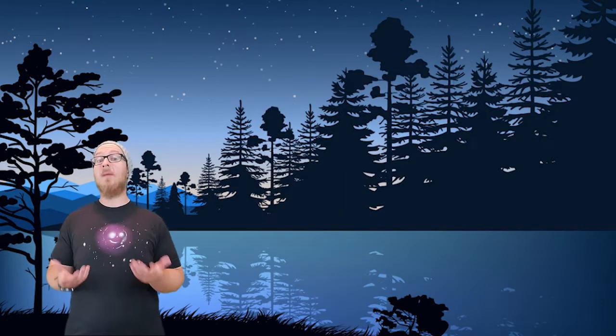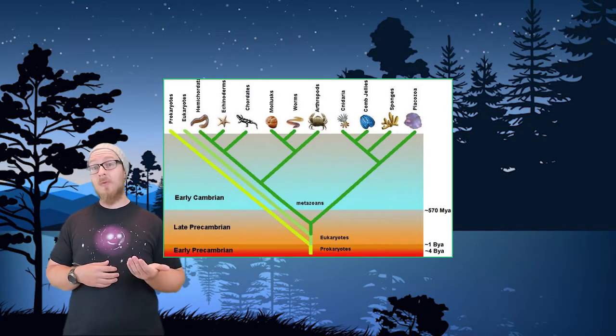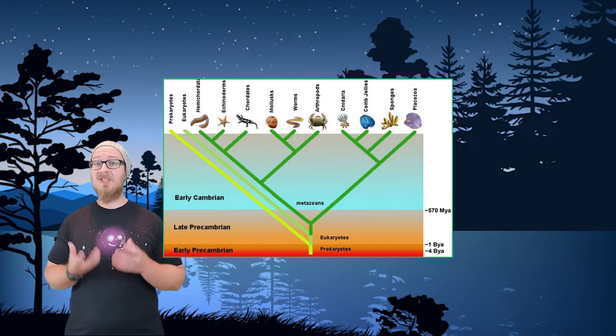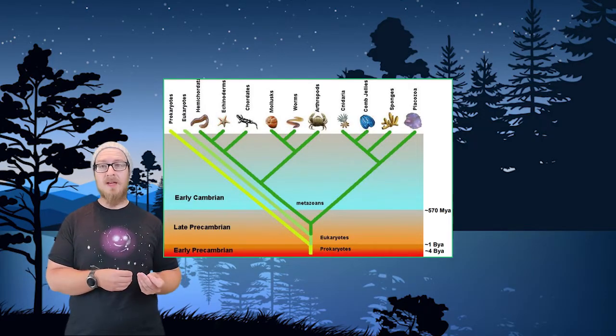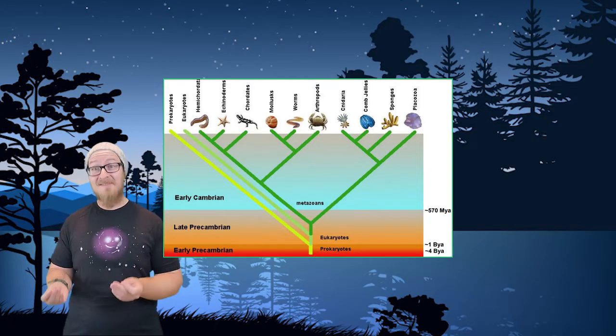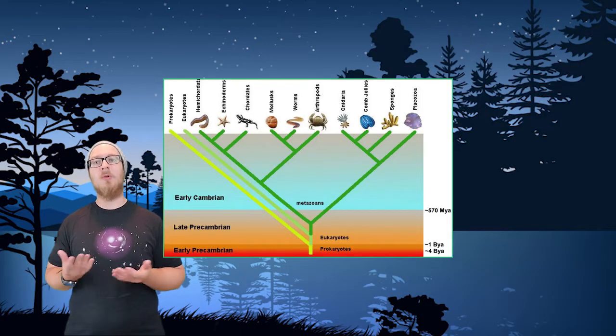Rapid speciation events occur when there is a drastic change in the environment, which opens up new conditions and therefore more exploitable niches. The most common example of this is the Cambrian Explosion, where an increase in available oxygen in the ocean sparked such a rapid speciation event that it resulted in the emergence of virtually every single phylum that we see in the animal kingdom.